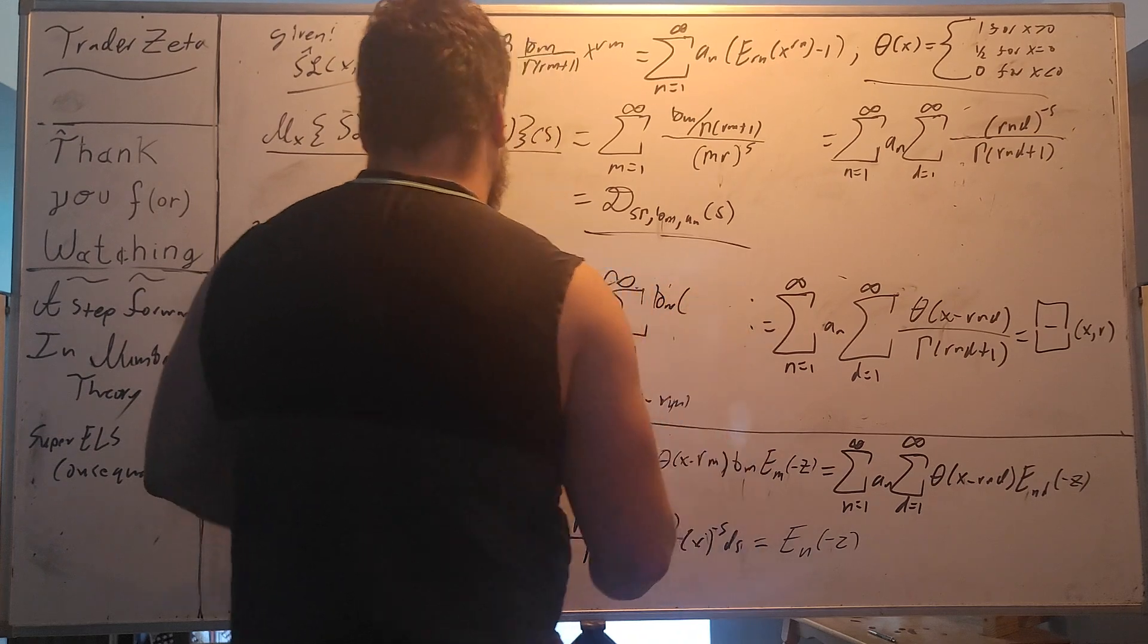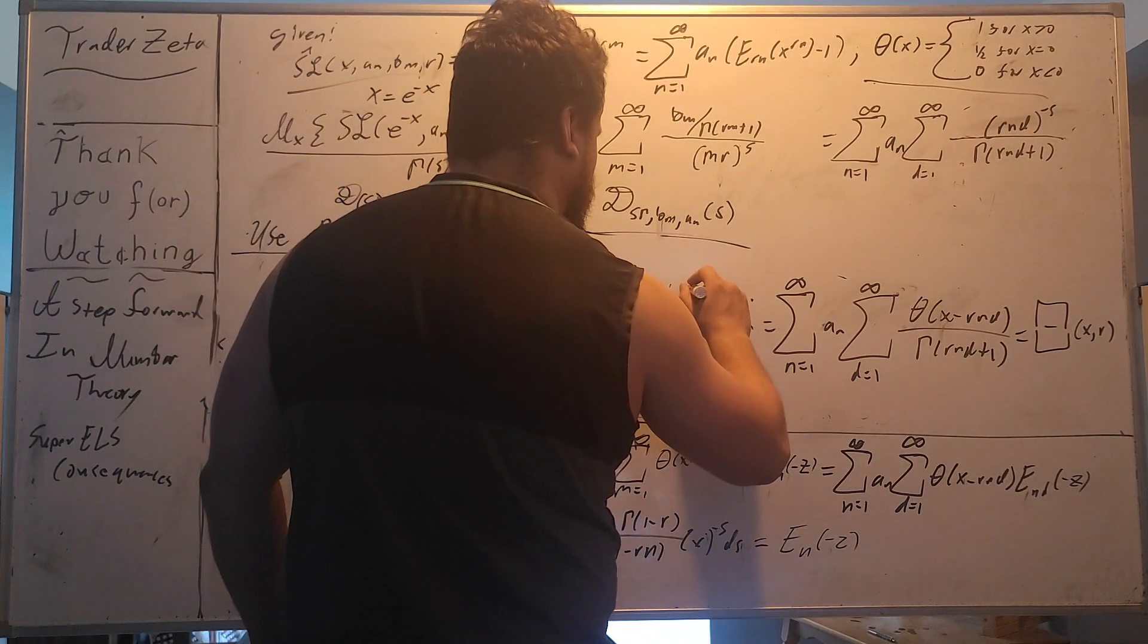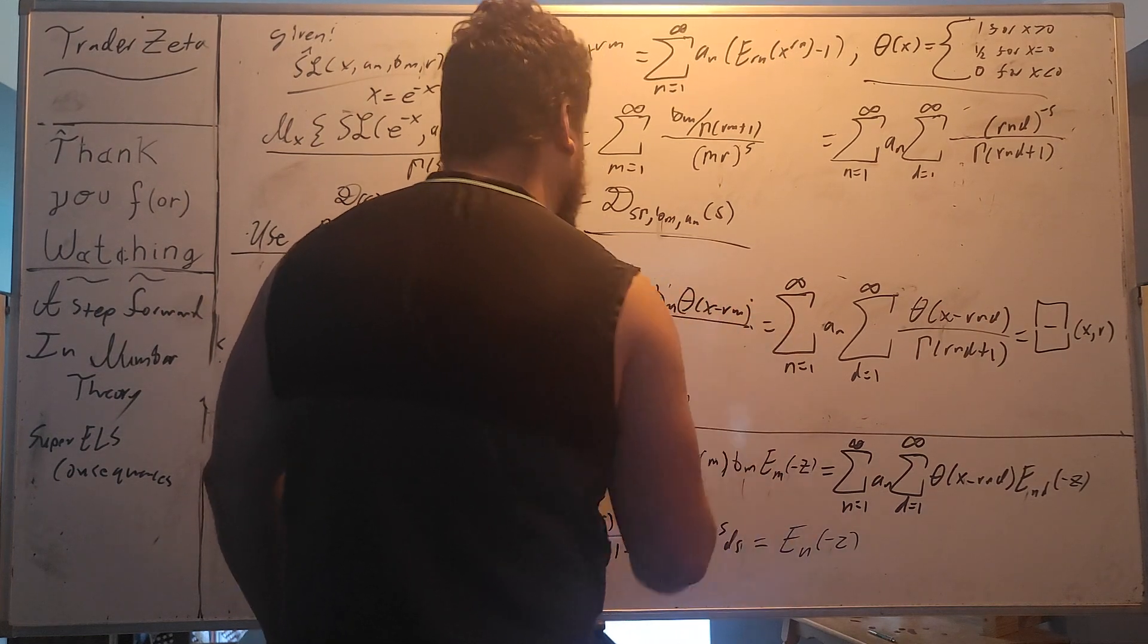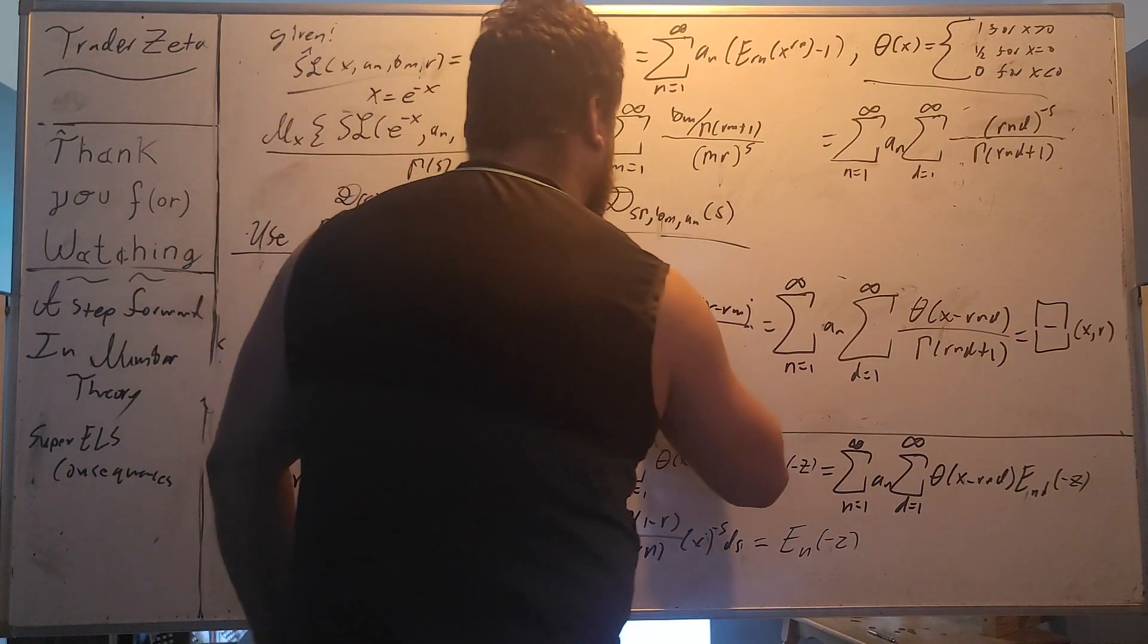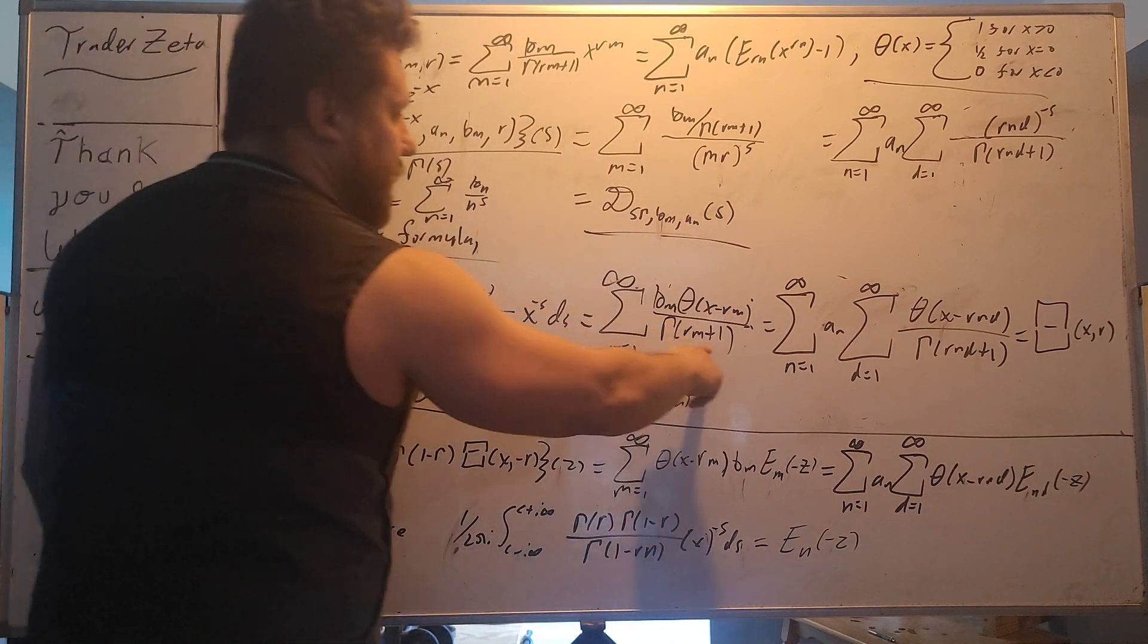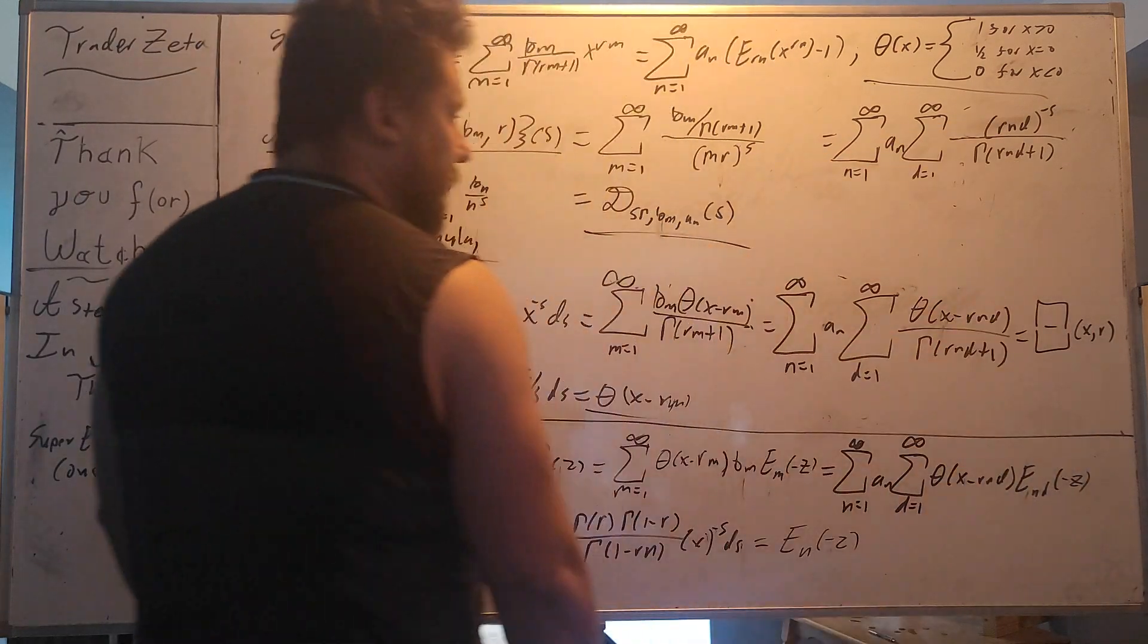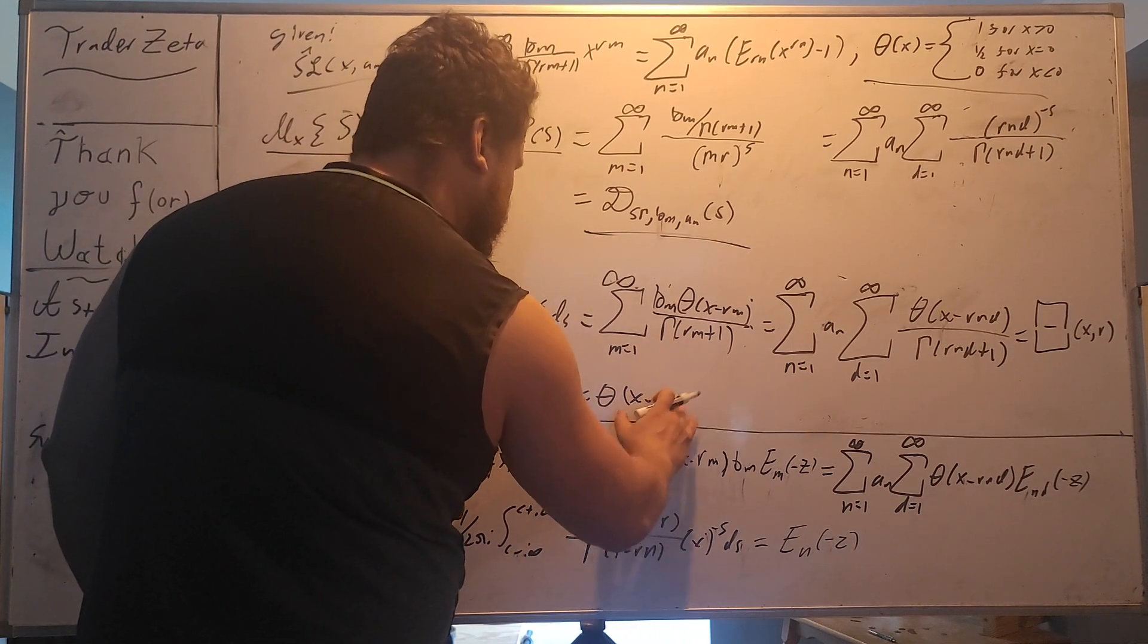Now, notice, we have similar argumentation, but just m, r. And in that case, r, n, d to the negative s. So we can perform the same argumentation for super gamma, b sub m, a sub m of s. Because we're going to just use this. In that case, it would just be like this, and then you get r, m. And that's exactly what I had before. So b sub m, theta x minus r, m divided by gamma r, m plus one. Very nice.